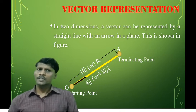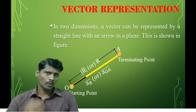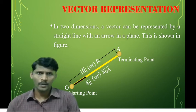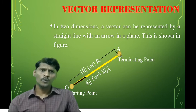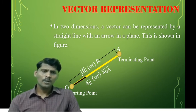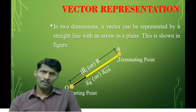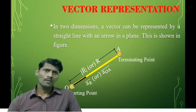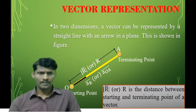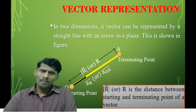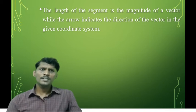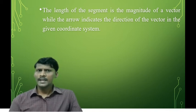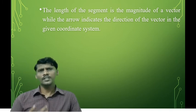In two dimensions, a vector can be represented by a straight line with an arrow on top. Consider the origin as the starting point and point A as the endpoint. The distance from the origin to point A is capital R-bar, and the unit vector along that direction is A_R-bar. The length of this segment is the magnitude of the vector, while the arrow indicates the direction of the vector in the given coordinate system.